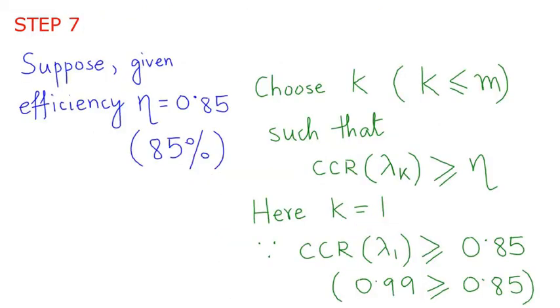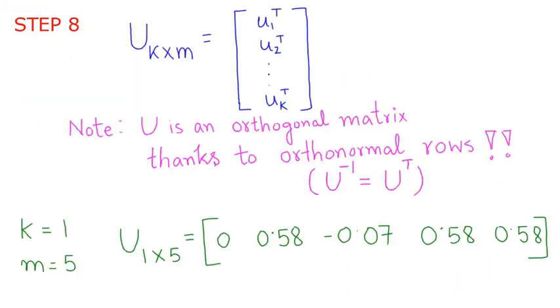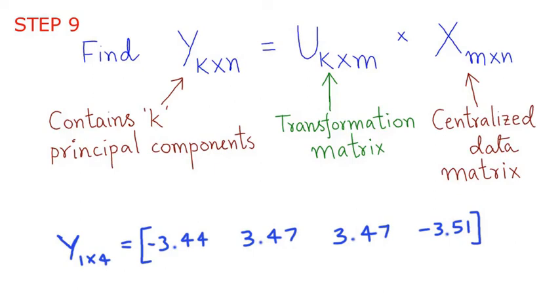Suppose if we need to recover at least 85% of the original image after compression, we choose the extraction efficiency ERA to be 0.85. Our idea is to reduce the number of rows from M to K. Choose K such that the cumulative contribution rate of the K-th eigenvalue is greater than or equal to 0.85. In this case, K equals 1. Now form a matrix U such that the first K eigenvectors form its rows. Then transform X using U to find Y which has only the principal components.